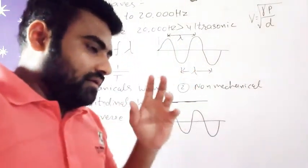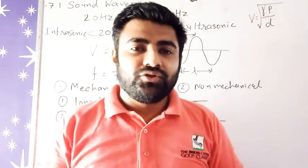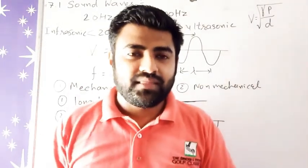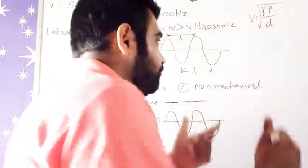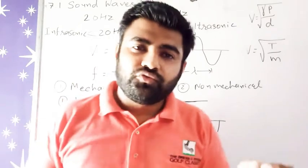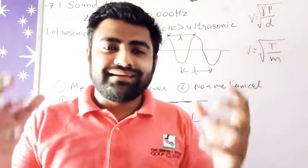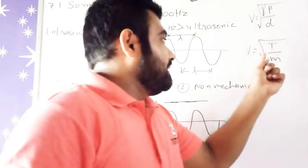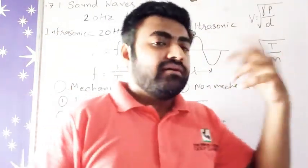Another case: whenever we disturb a string — like shaking a sheet to remove dust — a waveform is created. The velocity of that wave is: v = √(T/m), where T is the tension created in the string as particles interact with each other, and m is the mass per unit length. This gives us the velocity of particles in that string.